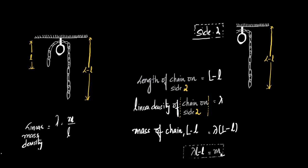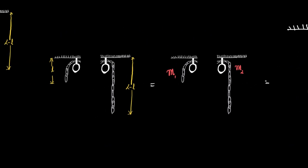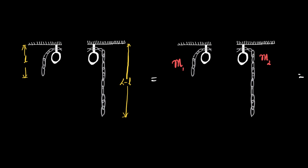We'll call this mass m1. In case two, I consider only the length L minus l, so I'm not interested in the other part of the chain. The length of the overhanging chain is L minus l. The linear density is constant throughout the chain at lambda. Therefore, the mass of the chain of length L minus l equals lambda times (L minus l), and I'll call that value m2.